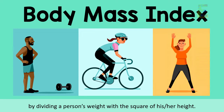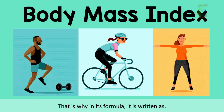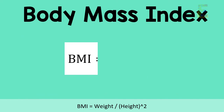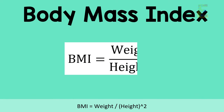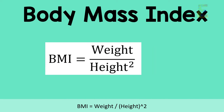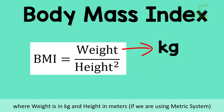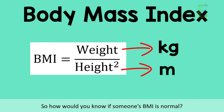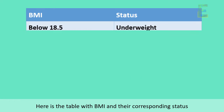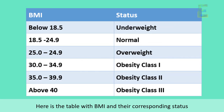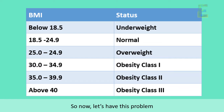That is why in its formula it is written as BMI is equal to weight over height squared, where weight is in kilograms and height is in meters if we are using the metric system. So how would you know if someone's BMI is normal? Here's the table with BMI values and their corresponding status.